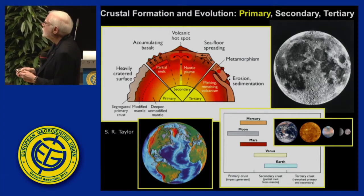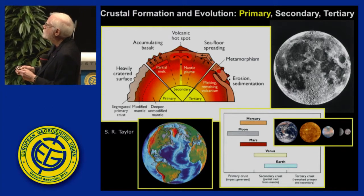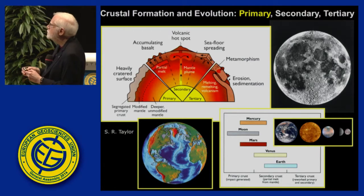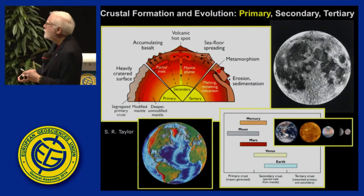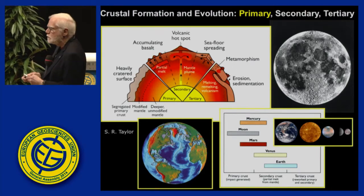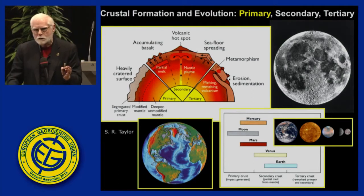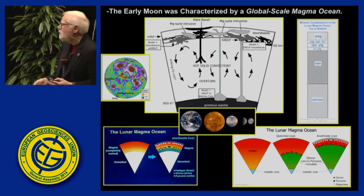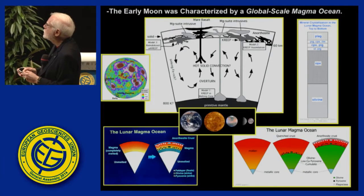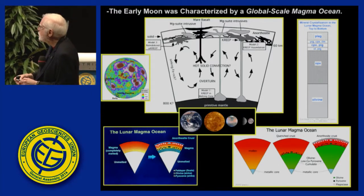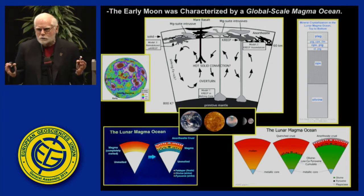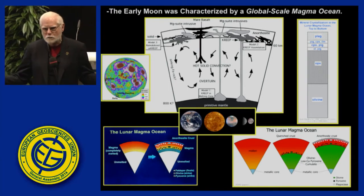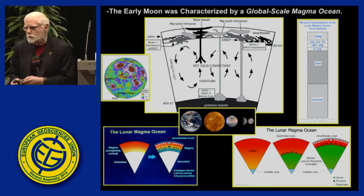On the Earth, we have a secondary crust from partial melting from the mantle — seafloor spreading and volcanic hot spots. The continents are largely made up of tertiary crust — reworked primary and secondary crust. So the Moon gives us a laboratory for the study of how primary crusts form. Here's a cross-section showing ideas about how this occurred with melting. In some cases the melting extends all the way to the interior; in others it's partial melting. At least half the planet was melted, and the plagioclase flotation crust formed from that.